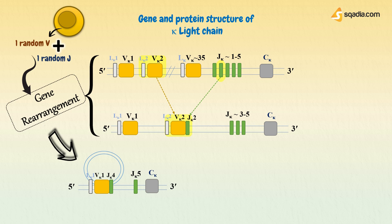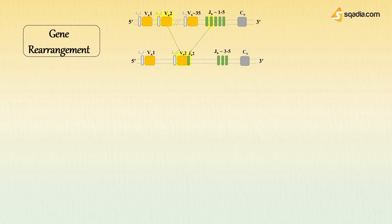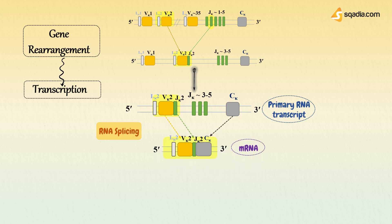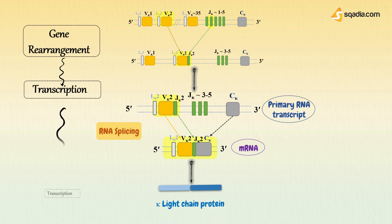Gene rearrangement involves the DNA encoding the kappa chain folding so that one of the V region genes is positioned next to one of the J region genes. The DNA is then cut so that the V gene can be joined to the J gene — the gene is now said to be rearranged. From this rearranged DNA, a primary RNA transcript is made by transcription. This primary RNA transcript contains both exons and introns, so in the next step RNA splicing takes place, removing introns and extra J sequences to generate messenger RNA. This mRNA is then translated into the kappa chain polypeptide, together with removal of the leader (L) gene segment.